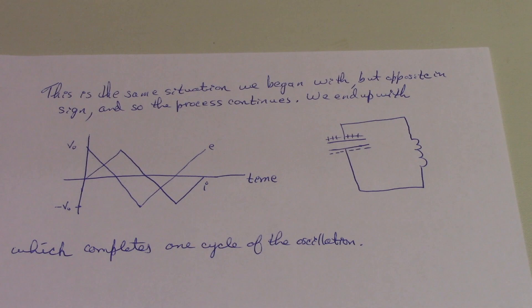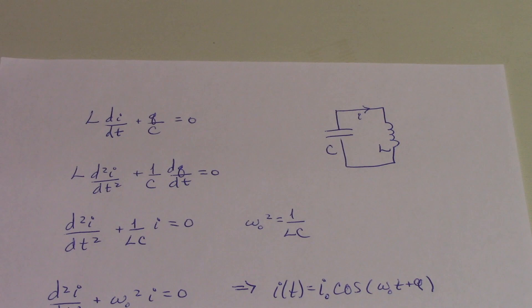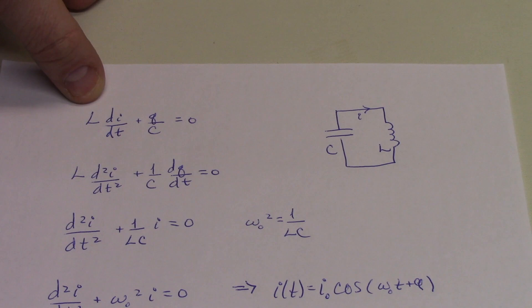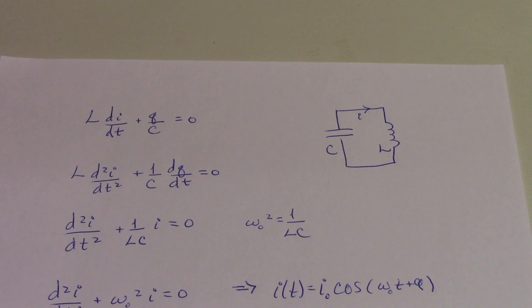For example, if we apply Kirchhoff's voltage law to this circuit, then we have an emf in the inductor, which is written as negative L dI/dt, and we have the voltage drop across the capacitor, which is of course Q, the charge on the capacitor, divided by C.